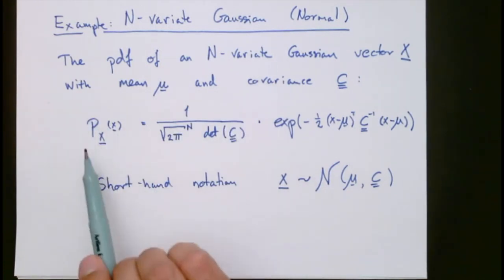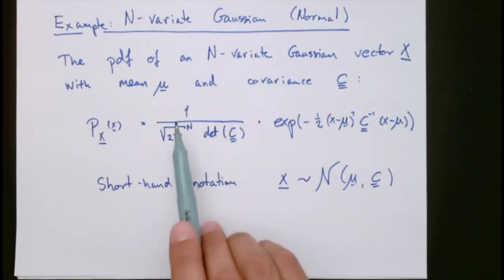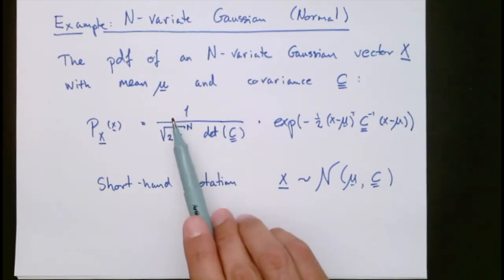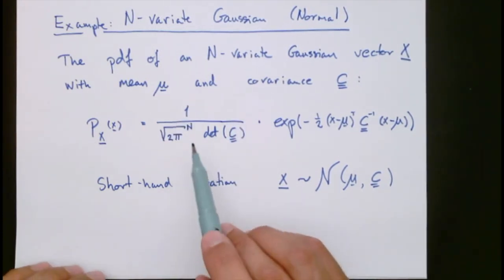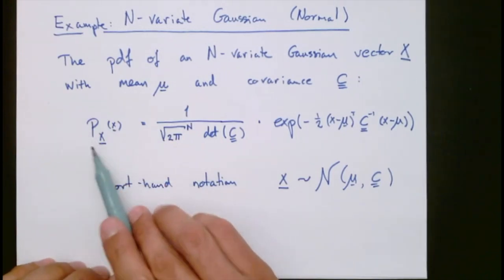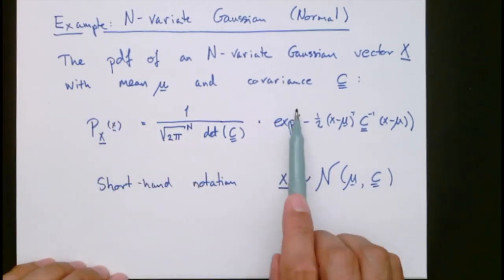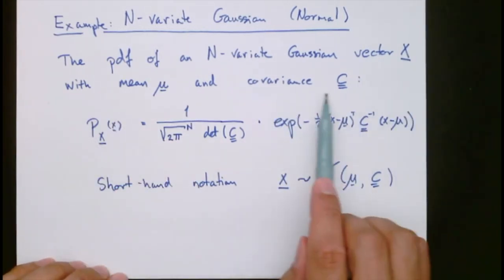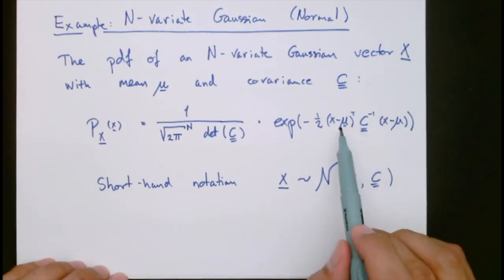But the pdf in the end will have this expression here. It consists of two factors. One factor, which is a normalization factor, that essentially takes care of that this integrates to 1. And then there is a kernel here, an exponential kernel. And if you look closely, you can see that this is a quadratic form.